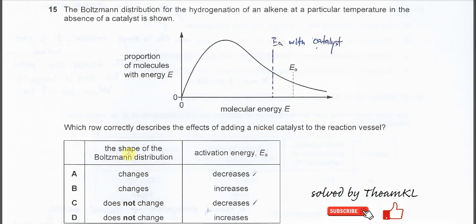So first, the shape of the Boltzmann distribution. If the catalyst is added, the catalyst will not change the shape. It will not really change the energy distribution for the mixture. The only function of the catalyst is to lower this activation energy. Therefore, the shape of the Boltzmann distribution does not change.